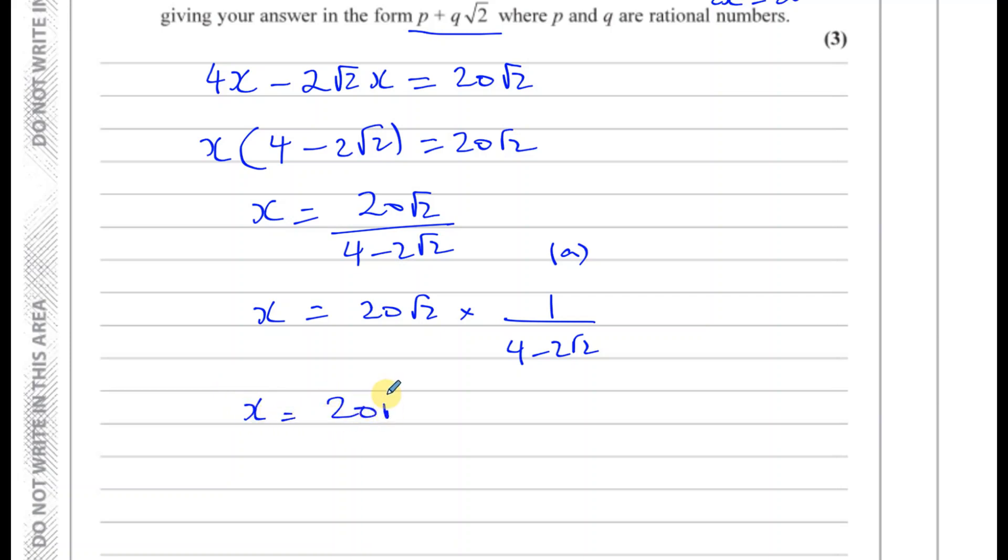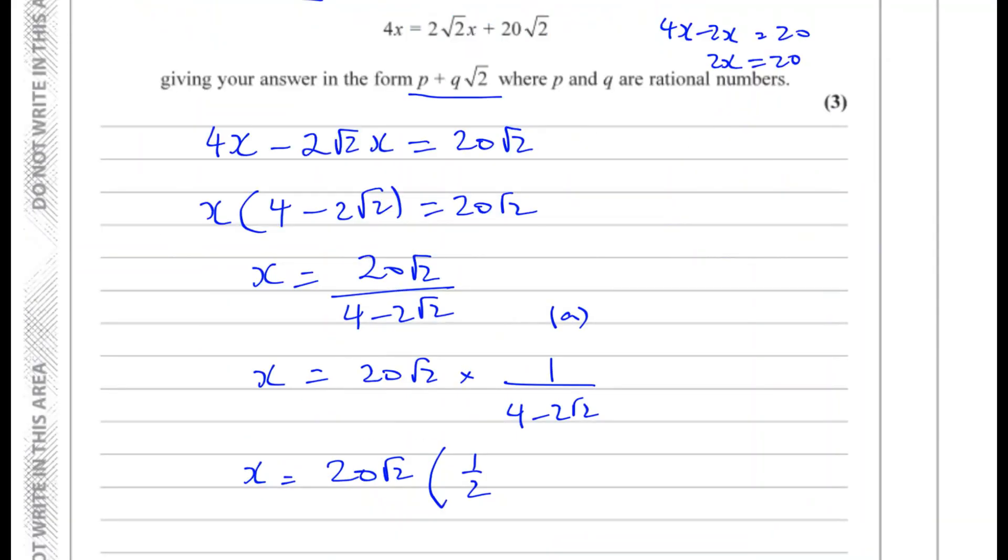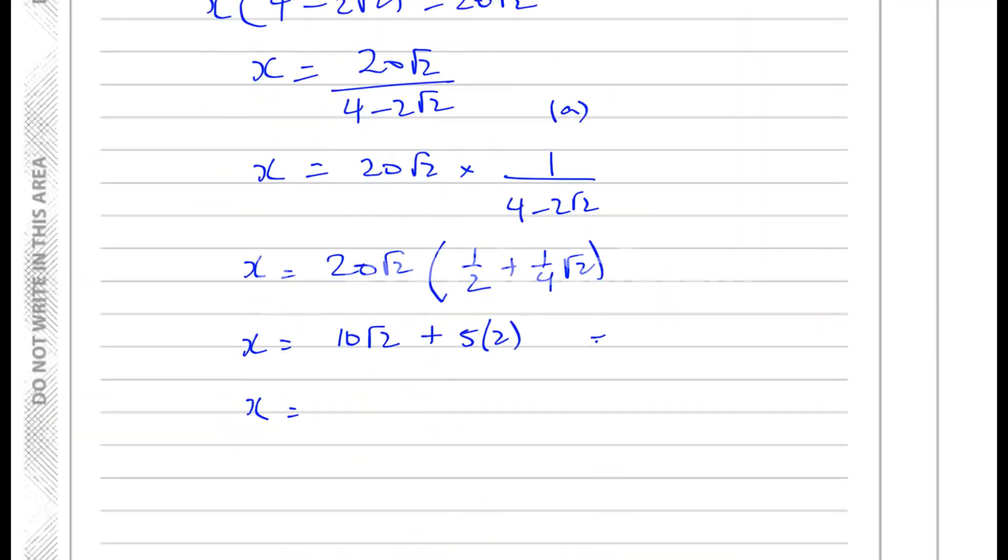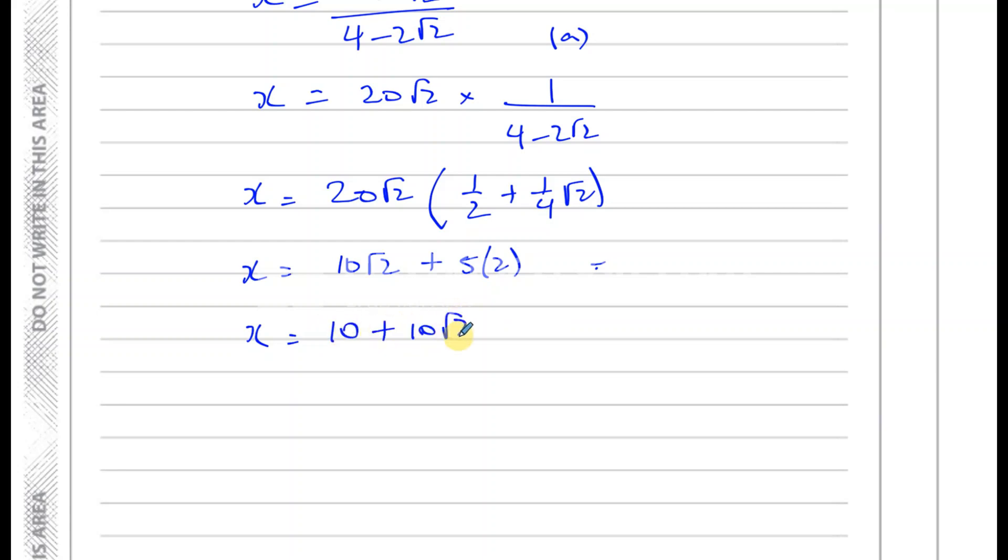So I have x equals 20 times √2 times a half plus a quarter √2. Now, when I multiply this, I have 20 times a half, which is 10. So I have 10√2 and I have 20 times a quarter. Now 20 times a quarter is 5, so I have plus 5 and I have √2 times √2, which is 2. So I end up with x equals 10√2 plus 10. Now, 10√2 plus 10, they want it in the other way, so I'll write it as 10 plus 10√2. And there we have our answer for part B.